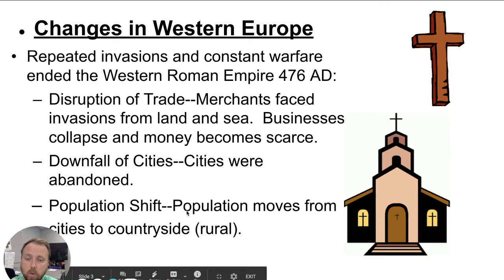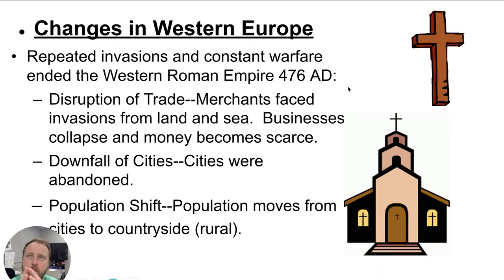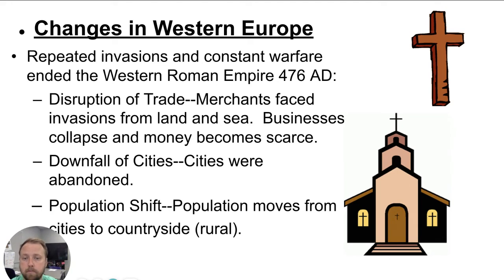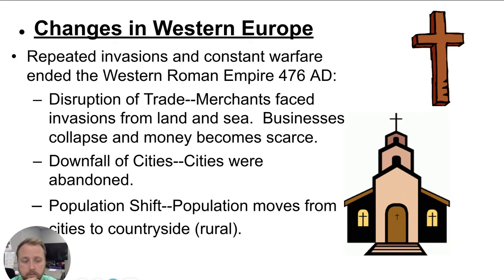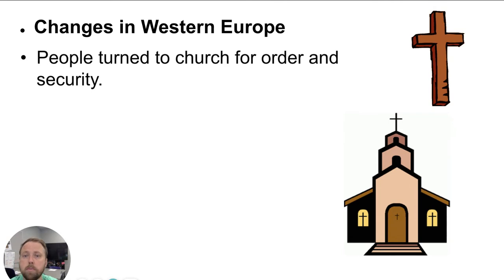As cities were abandoned and people moved to less-populated rural areas, there was less opportunity for education, less opportunity for change and advancement. As people weren't together and communicating, there was less opportunity to build and learn. This, in a simplified way, is part of why the Dark Ages occurred.